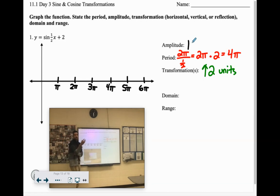Sine remember starts at zero or the center of the graph, so our center is shifted up two units. Here's the center line, but our amplitude is one, so it can go one above it or one below it.